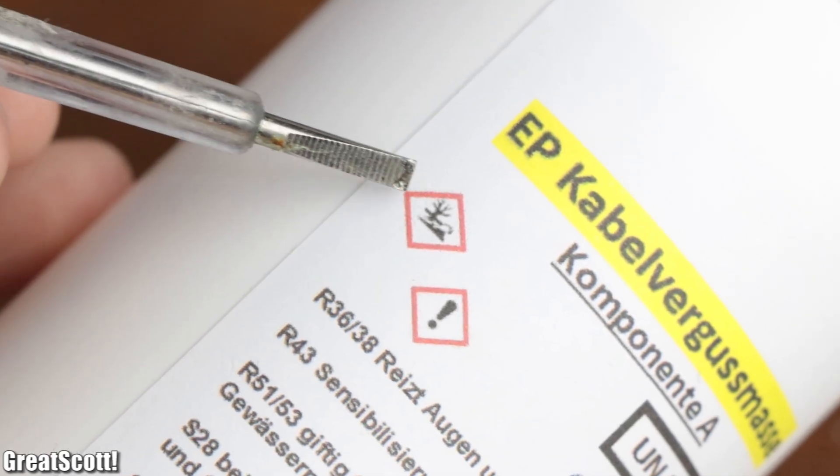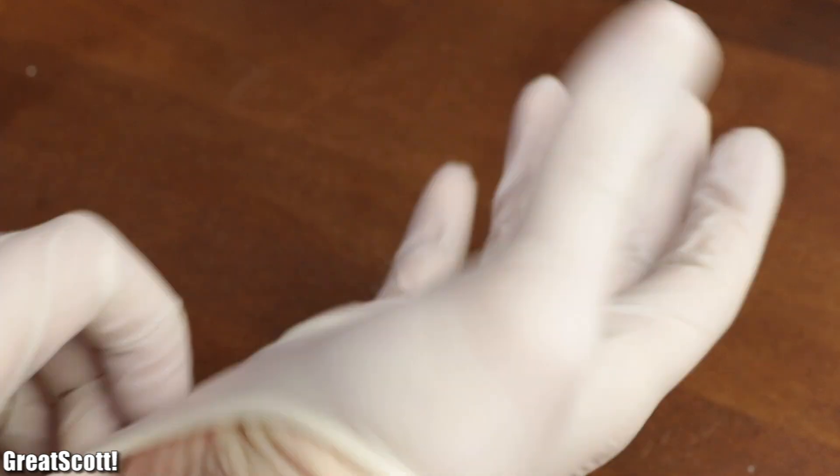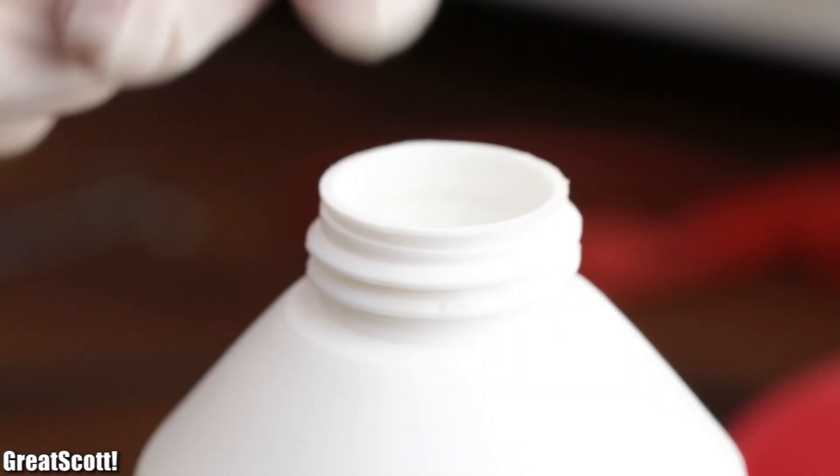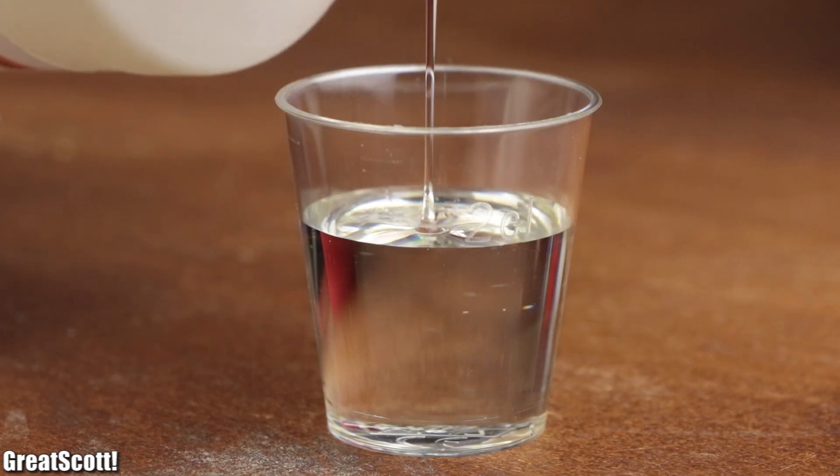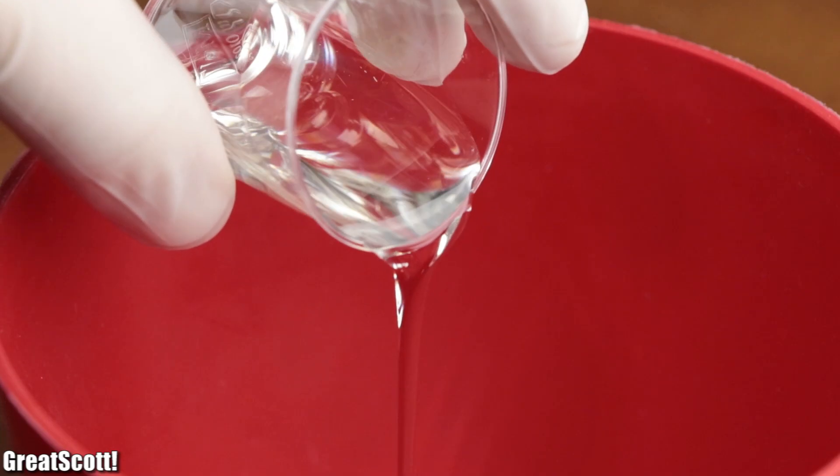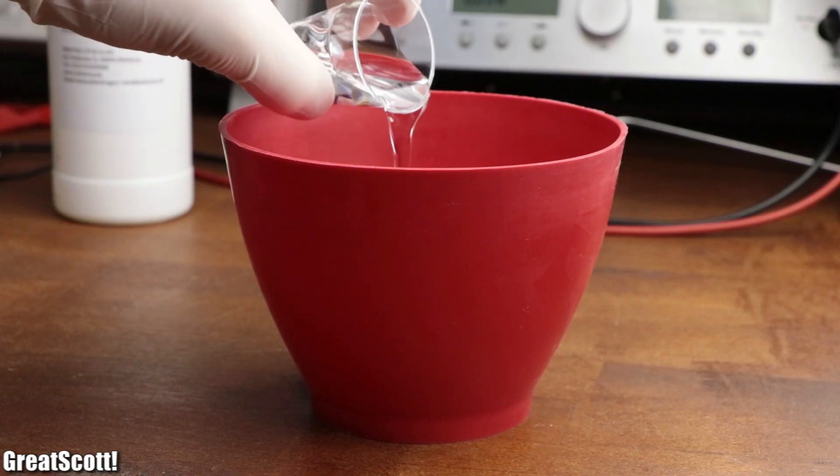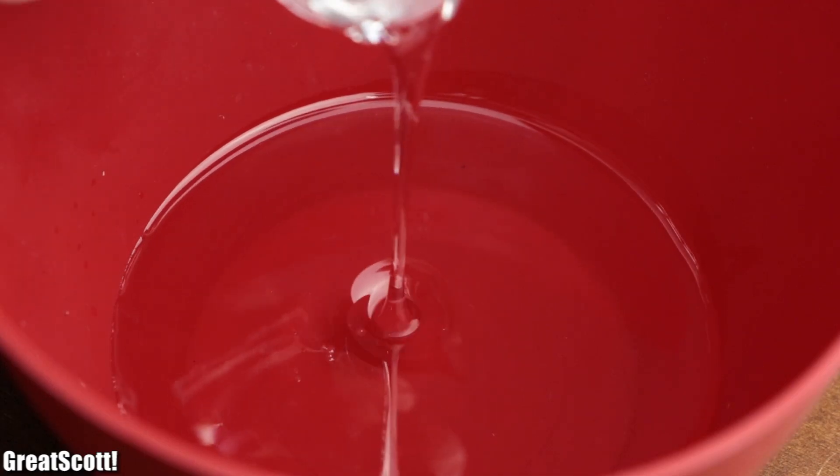For my mixture I utilized shot glasses to measure four centiliters of component B and eight centiliters of component A, which I then poured into a small silicone bucket.